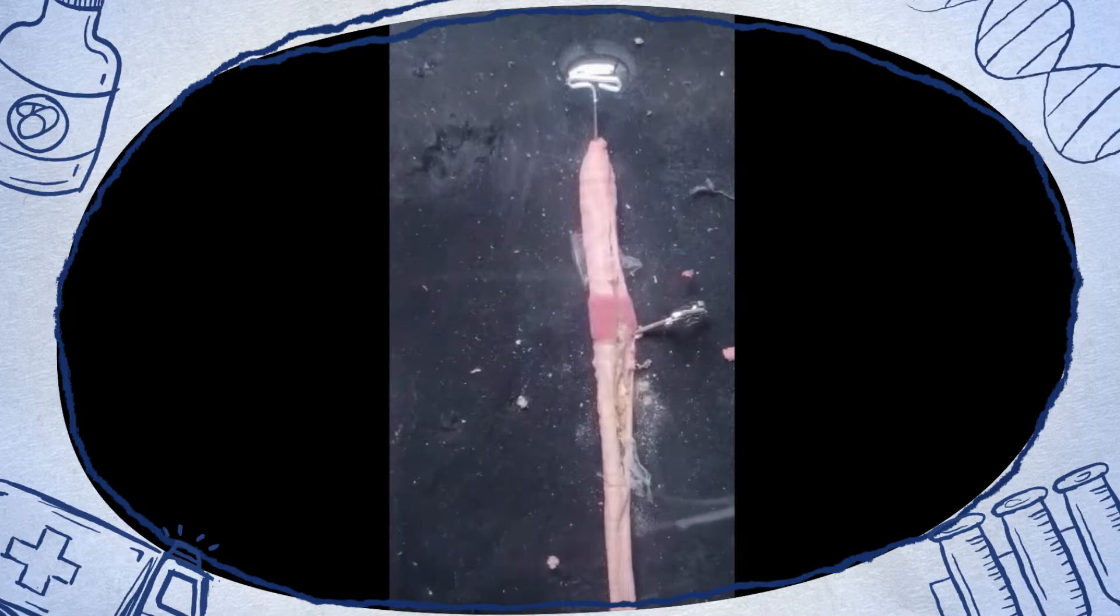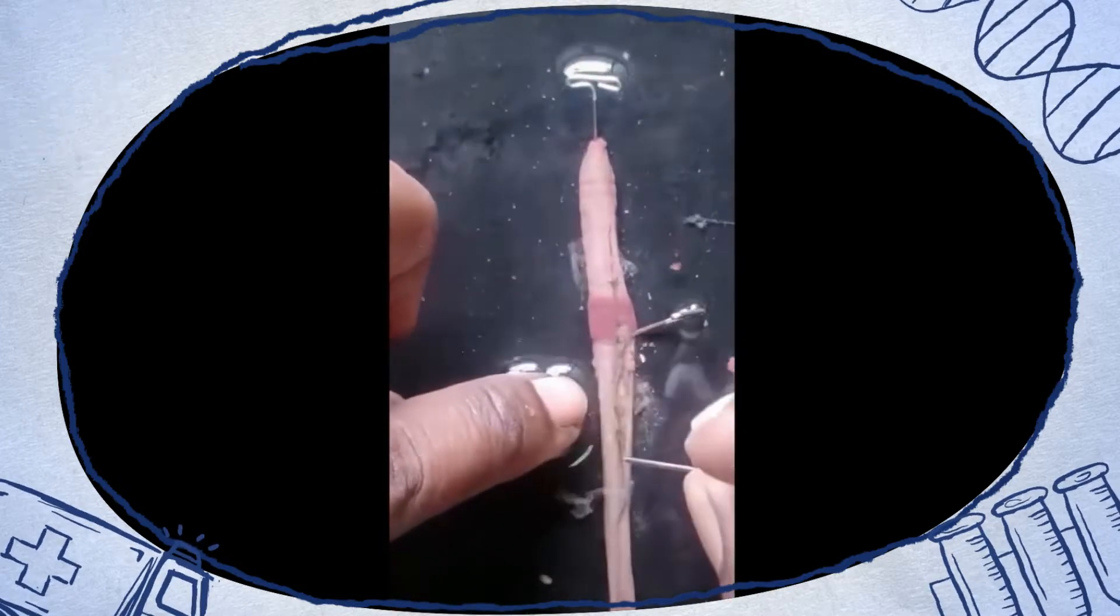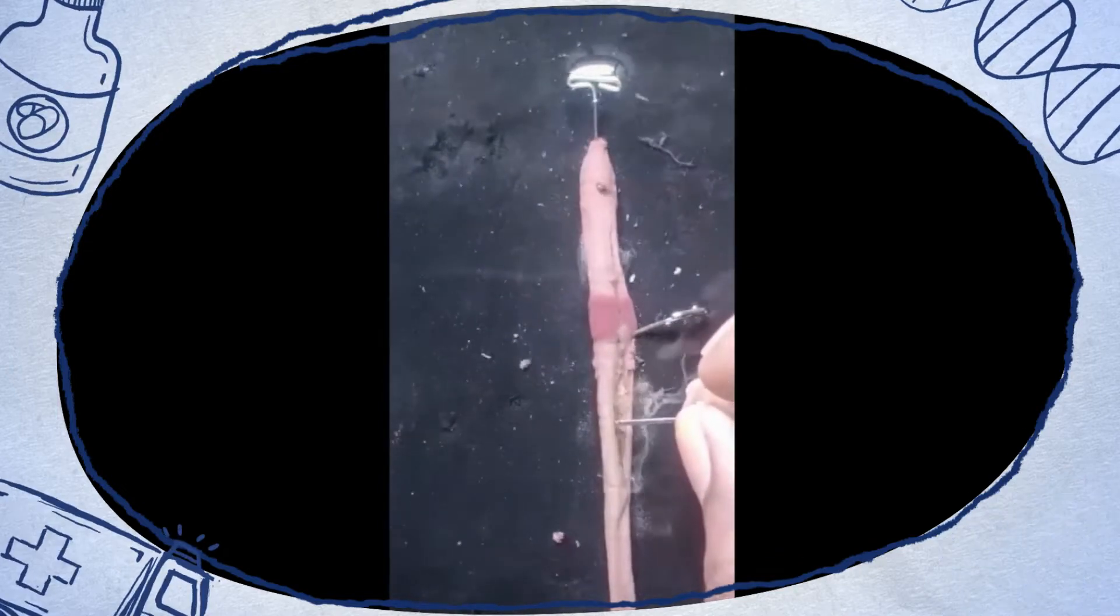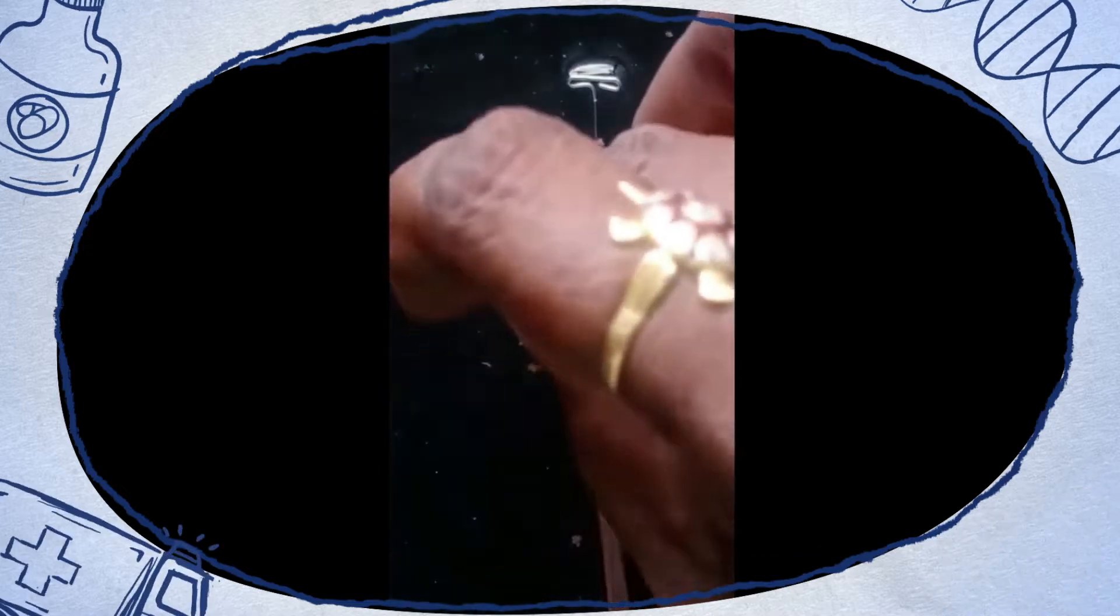Once the animal has been opened, you can separate the epidermis from the digestive tract and pin it on either side.